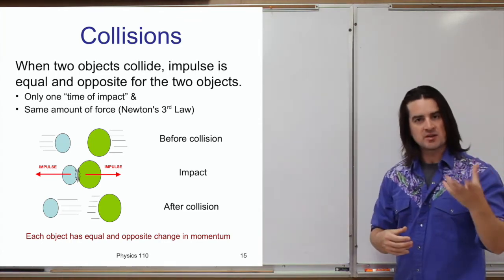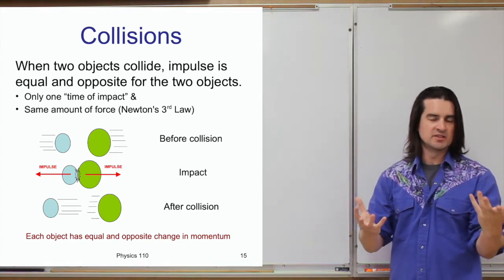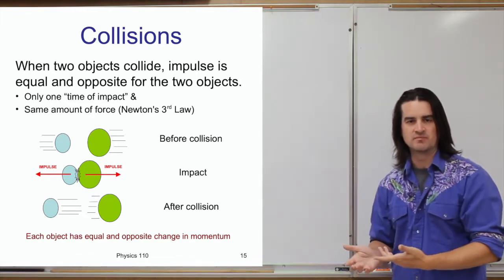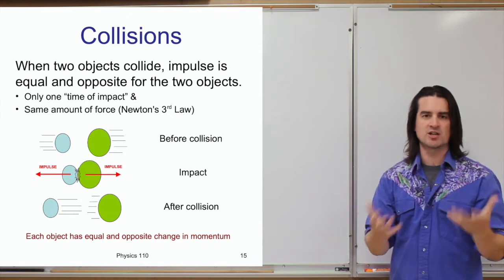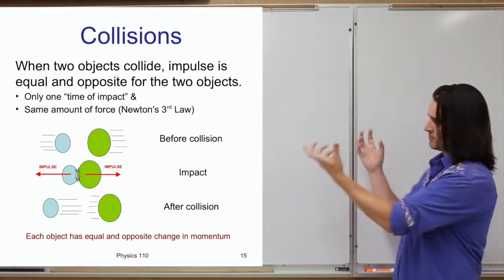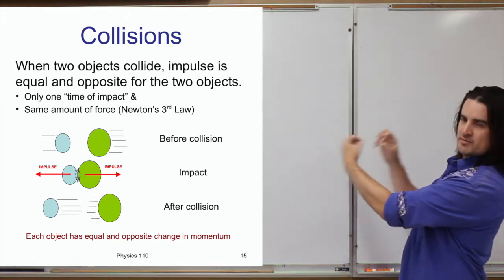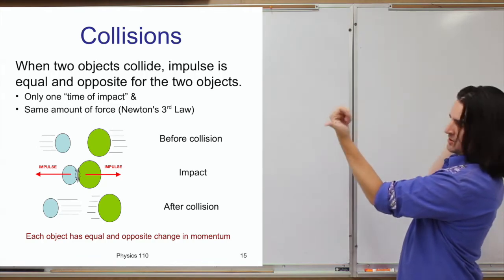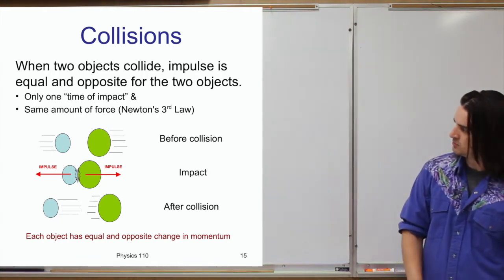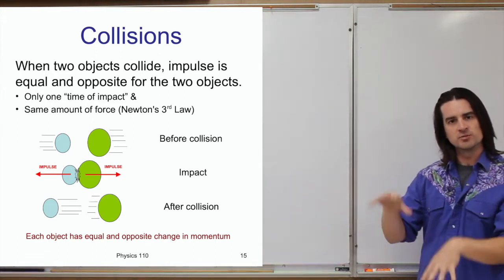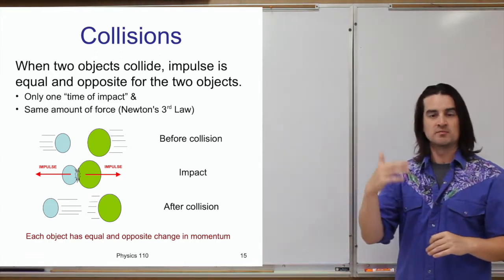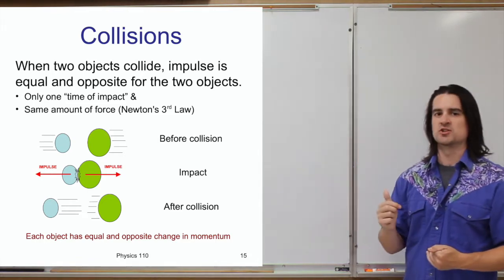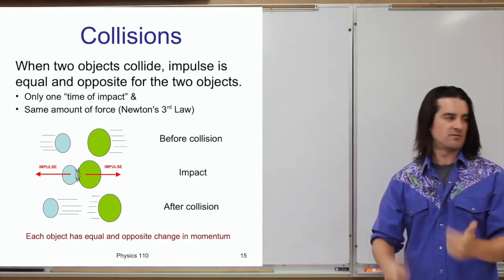If the objects have the same mass, same change in momentum means the same change in velocity. So two equal-mass objects coming in at the same speed will collide and move backwards at exactly that same speed, just in the opposite direction. When masses are unequal it becomes a bit trickier, but the concept of momentum — and specifically mathematically — is very useful in figuring out which way they'll be moving and how fast afterwards.